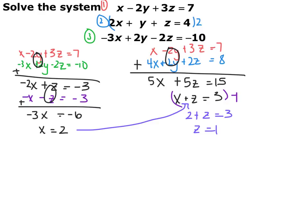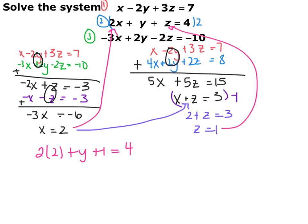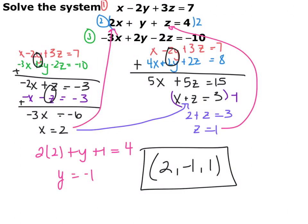Now you have two of your variables and still need to solve for the third. Take x and z and plug them into any of the original equations. I'll plug into the second equation since y doesn't have a coefficient. You end up with y equals negative 1. Just like previous examples, these three lines intersect at one point — it's just a three-dimensional point. Your answer is (2, -1, 1).